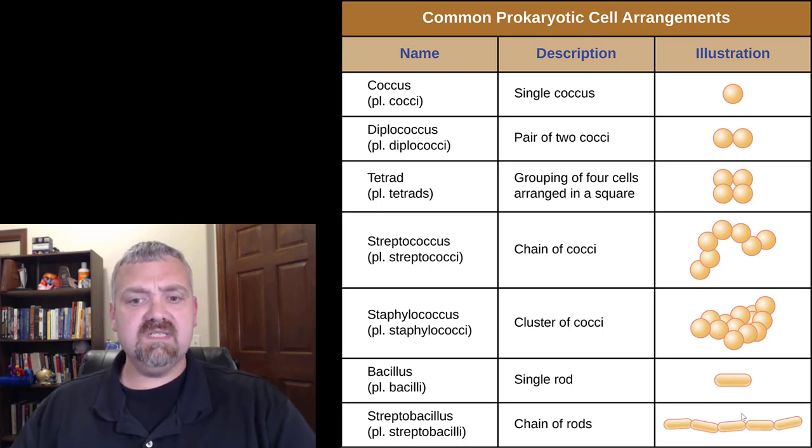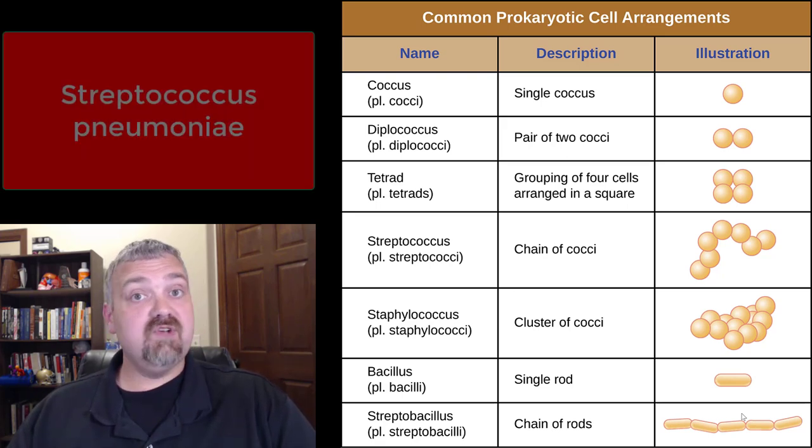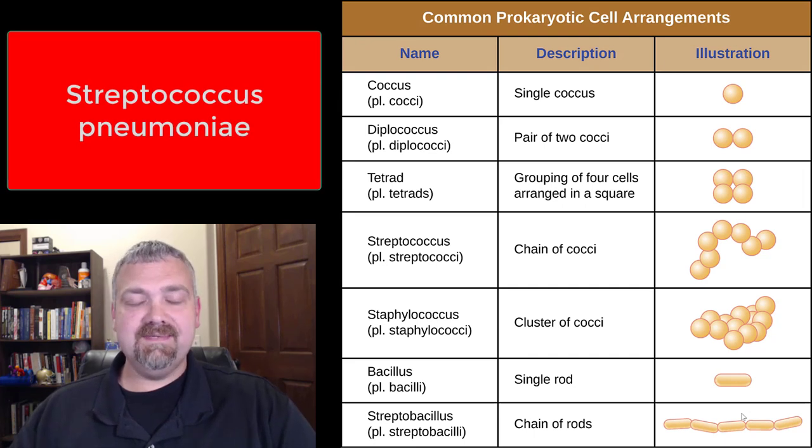If you just have a single organism, it would be a coccus or a bacillus. Diplo means two. So if you have a pair of spheres, it would be a diplococcus. A pair of rods would be a diplobacillus. The most important diplococcus would be Streptococcus pneumoniae. I know the name tells you it's in chains, but it's a diplococcus most of the time.